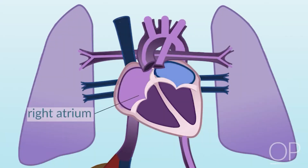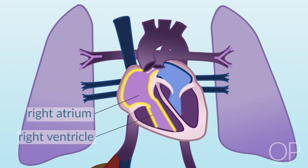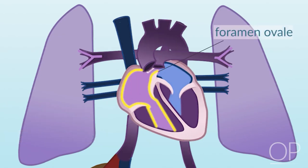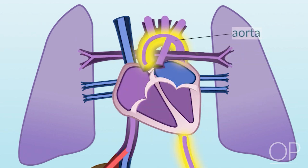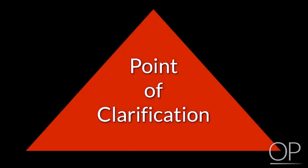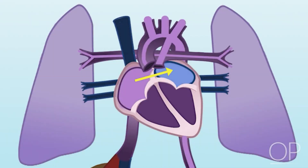Once in the right atrium, some of the blood flows to the right ventricle, and some of the blood flows through the foramen ovale to the left atrium and into the left ventricle, where it is then pumped out into the aorta to the body. Point of clarification: the flow of blood from the right atrium to the left atrium via the foramen ovale enables oxygenated blood from the placenta to reach the coronary arteries and cerebral circulation, the two most metabolically active organs in the developing fetus.